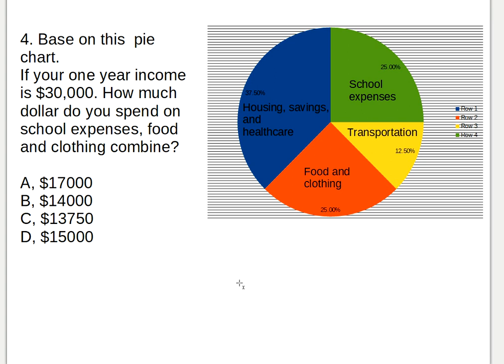The fourth question: based on this pie chart, if your one-year income is thirty thousand dollars, how much do you spend on school expenses and food combined? This is the easiest of the five questions. Twenty-five percent plus twenty-five percent is fifty percent, and fifty percent of thirty thousand dollars is fifteen thousand dollars. You don't need a written solution — just think about it.